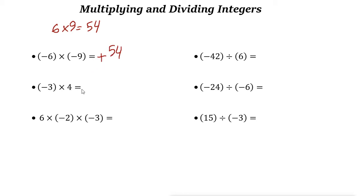Next: negative times positive is negative. This one is negative and four is positive, so the answer is negative. Three times four is twelve, so the result is negative twelve.